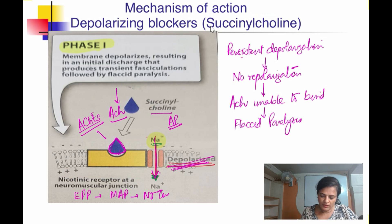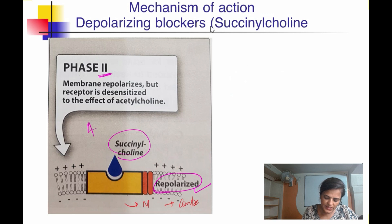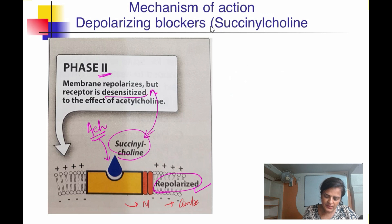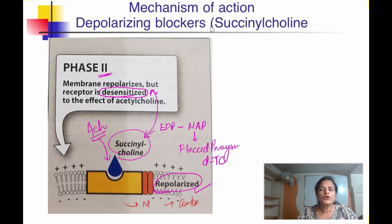Always remember: for the next depolarization, repolarization is a must. This Phase 1 block is followed by Phase 2. In Phase 2, though the membrane is repolarized, acetylcholine is still unable to bind because continuous exposure of the receptor to succinylcholine causes receptor desensitization. So there is no end plate potential, no muscle action potential, leading to flaccid paralysis — just like that seen with d-tubocurarine, a competitive or non-depolarizing blocker.